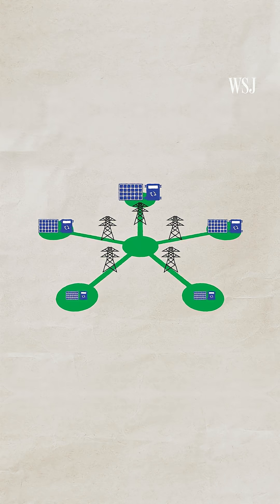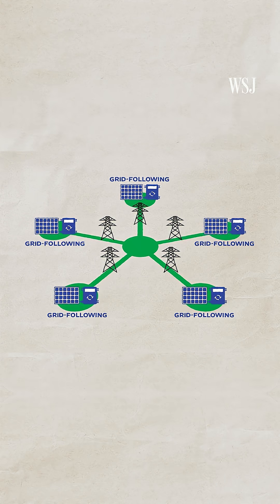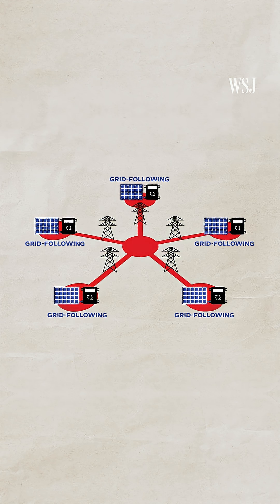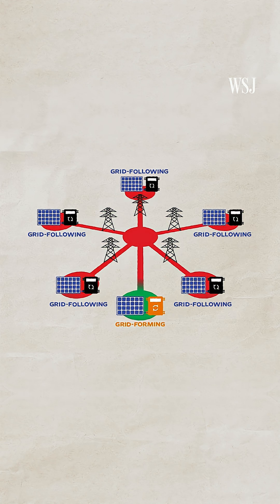Most inverters at renewable power plants today are grid following, meaning they rely on the grid's voltage and frequency. So if there's an outage, the inverter loses its reference and can't function. Grid forming inverters are more advanced. They can operate independently and support the grid when there's a disruption.